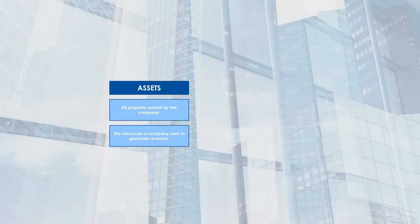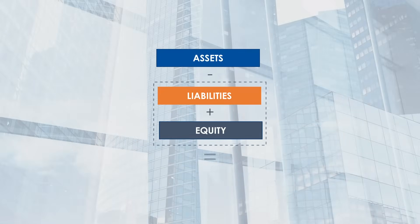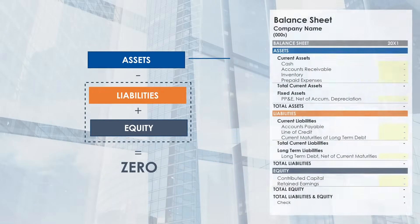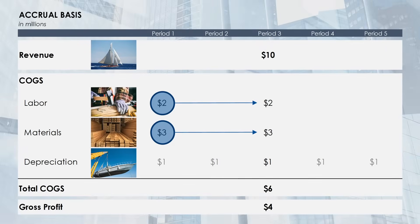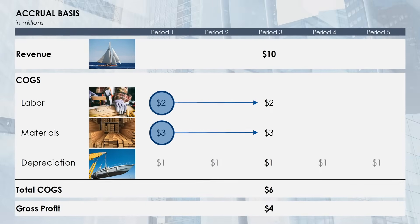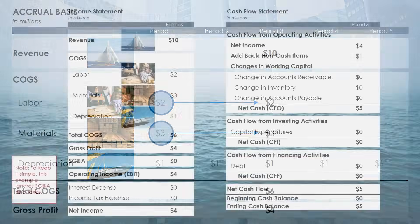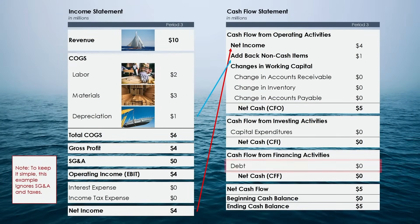The content starts where everyone new to finance and accounting should, with the accounting equation, and quickly evolves to include the balance sheet as a formal presentation of the accounting equation. Then to the income statement which measures a company's success in selling goods and services. And finally, to the cash flow statement which takes net income on the income statement and converts it into cash flow for the period.